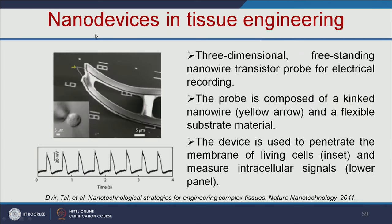Another application is nanodevices in tissue engineering. A three-dimensional free-standing nanowire transistor probe is used for electrical recording. This probe is composed of a nanowire and a flexible substrate material. The device is used to penetrate the membrane of living cells and measure intracellular signals. This small nanodevice can penetrate cells and measure intracellular signals.